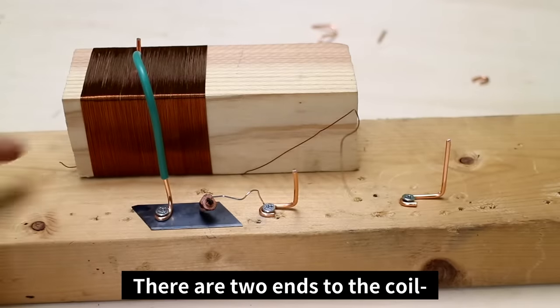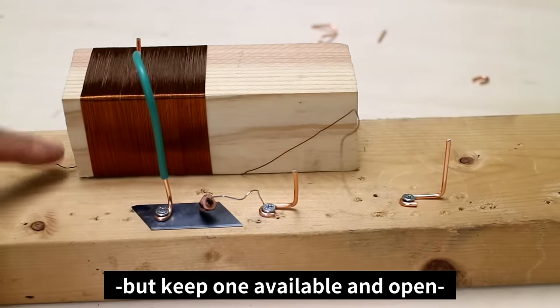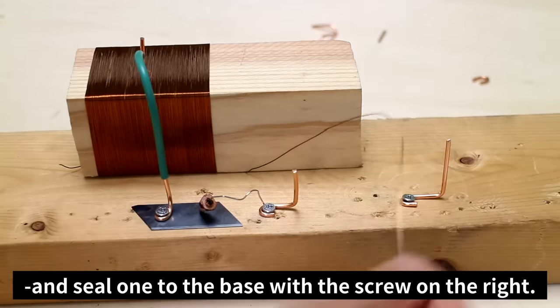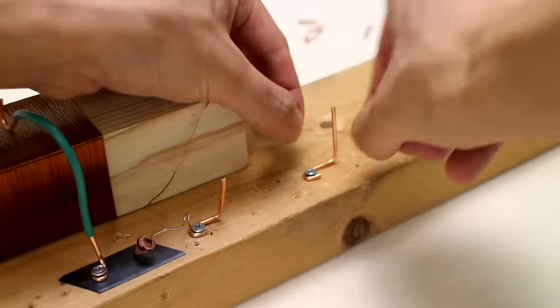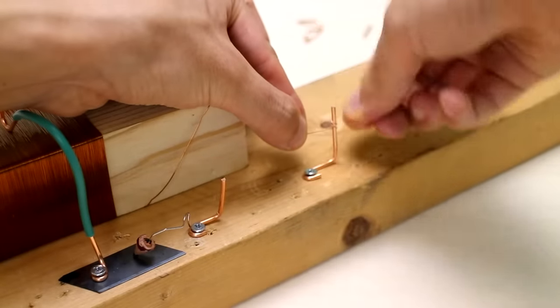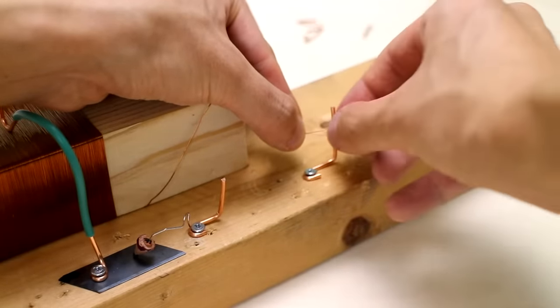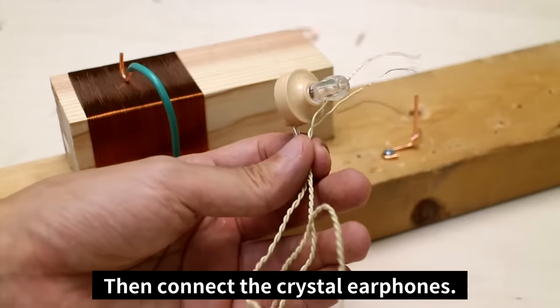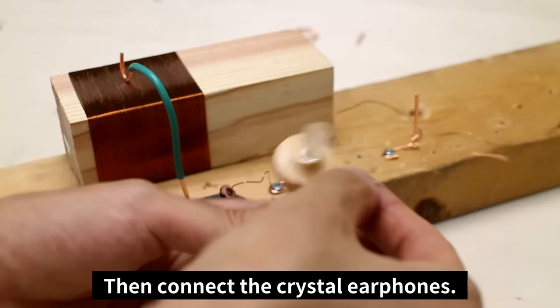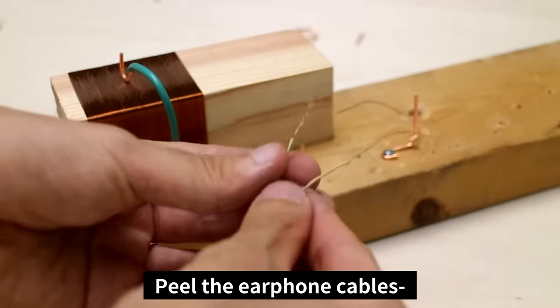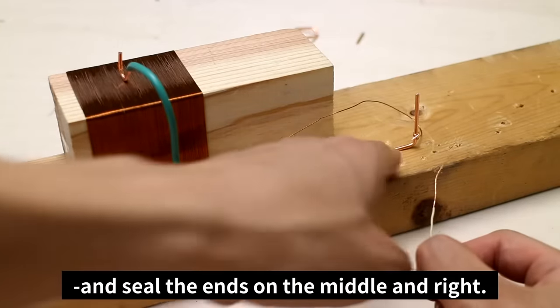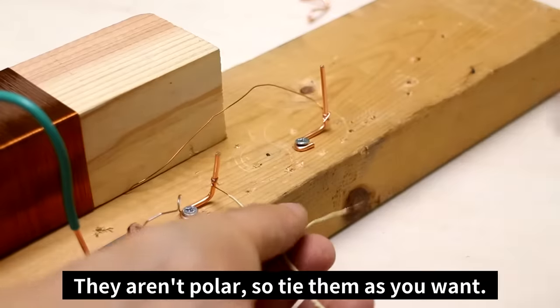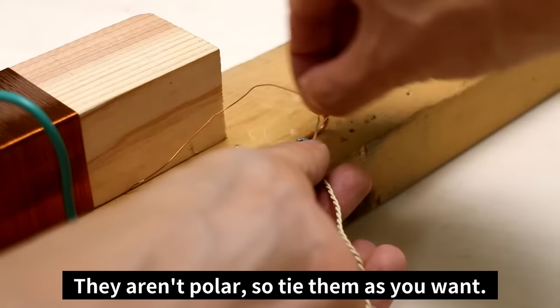There are two ends to the coil, but keep one available and open. And seal one to the base with the screw on the right. Then connect the crystal earphones. Peel the earphone cables. And seal the ends on the middle and right. They aren't polar, so tie them as you want.